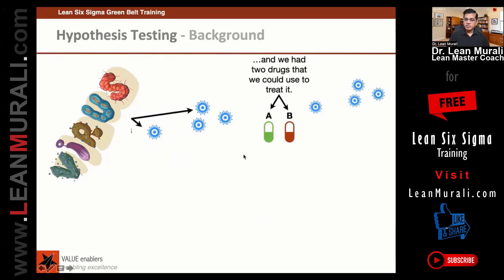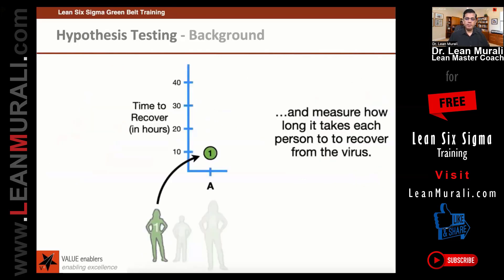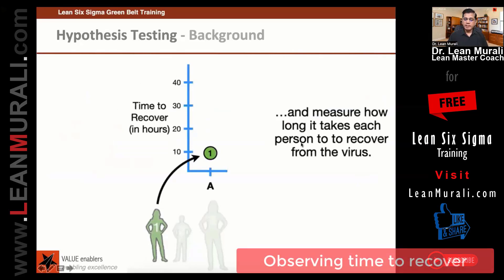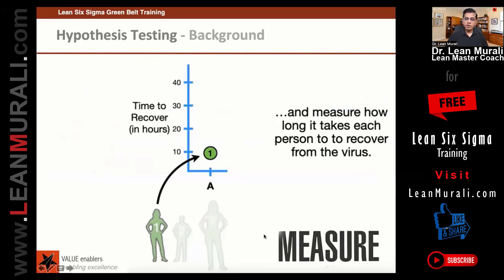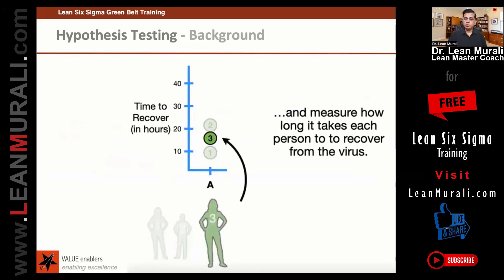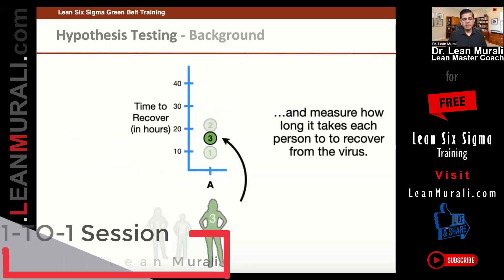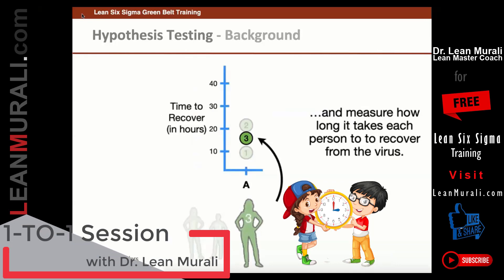We had two drugs that we could use to treat the virus. We gave drug A to three people. After giving the drug, we observed the time to recover and measured how long it takes for each person to recover from the virus. We also gave it to person B and person C, and you can notice the time that it takes for everyone to recover.